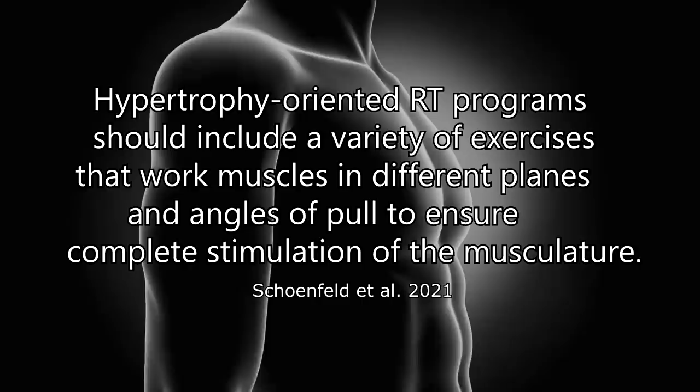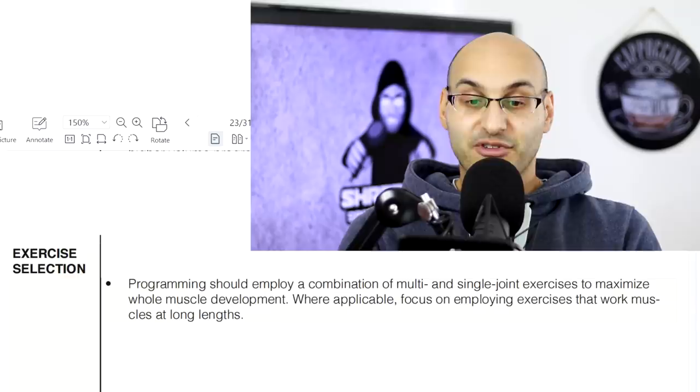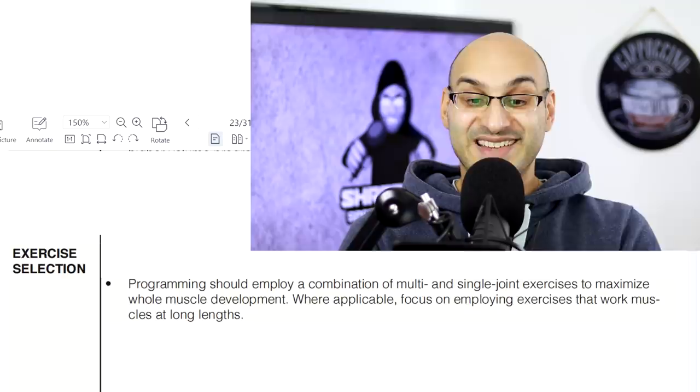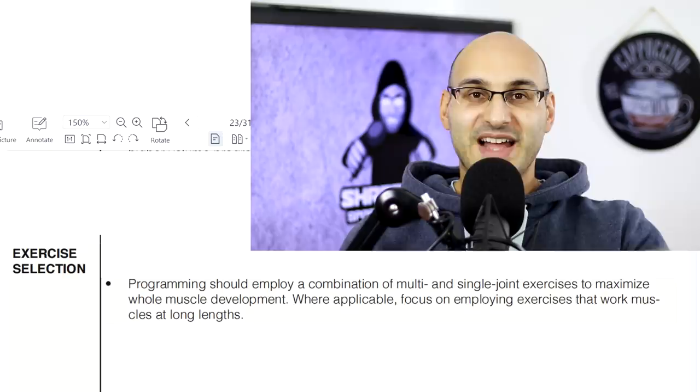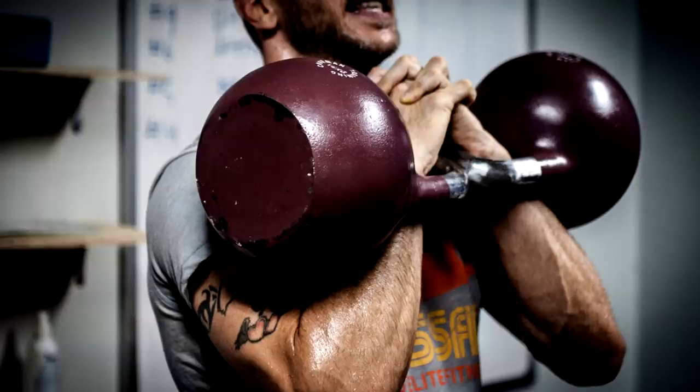On exercise selection: hypertrophy-oriented programs should include a variety of exercises that work muscles in different planes and angles of pull to ensure complete stimulation of the musculature. Programming should employ a combination of multi- and single-joint exercises to maximize whole muscle development. Where applicable, focus on employing exercises that work muscles at long lengths. Don't restrict yourself to standard movements — different variations and angles challenge the muscle from different directions. Change equals adaptation, but always maintain progressive overload and keep your eye on your goal.